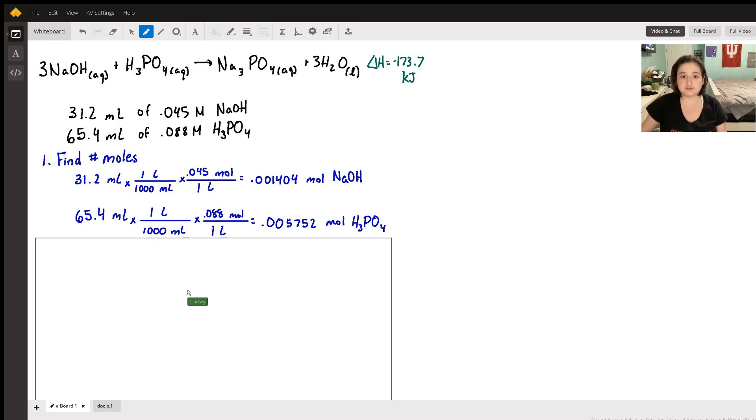I just took the quick shortcut of knowing that we need three moles of NaOH, three times the amount of NaOH that we need for phosphoric acid.